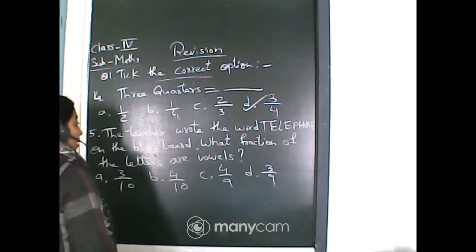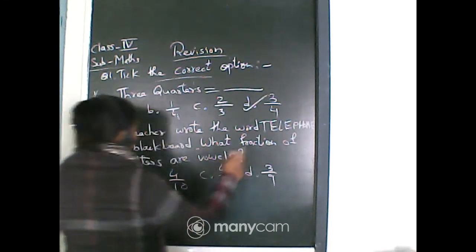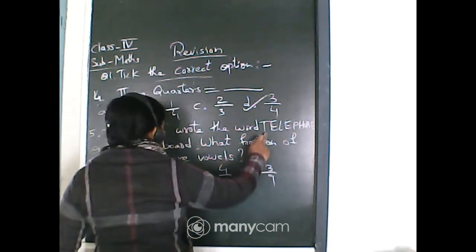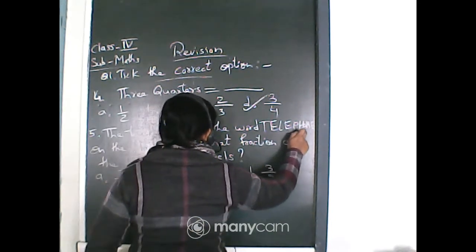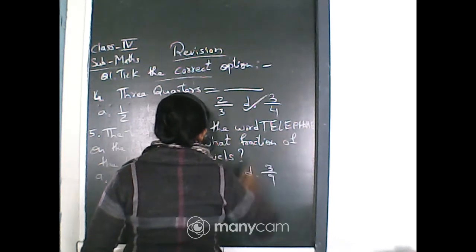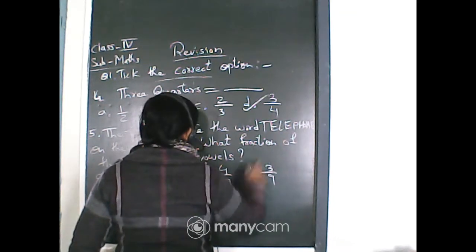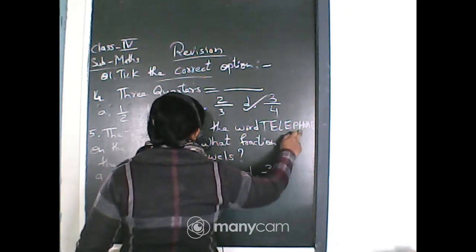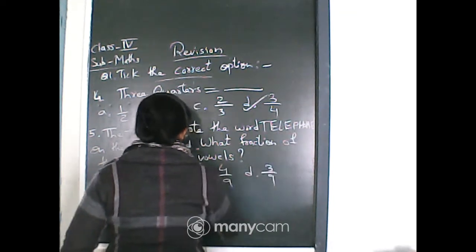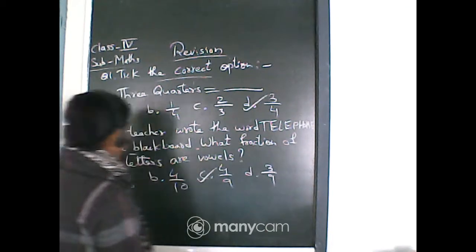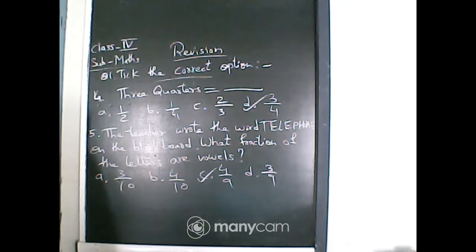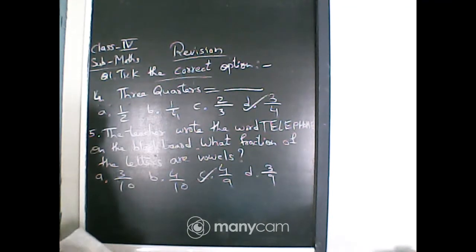First count the total number of letters: 1, 2, 3, 4, 5, 6, 7, 8, 9 — total 9 letters. Out of these, the vowels are 4. So 4 are vowels out of 9, and you will write the answer 4/9.